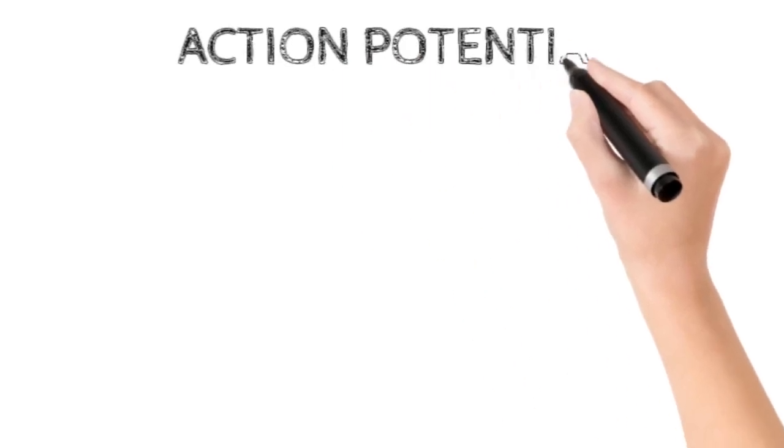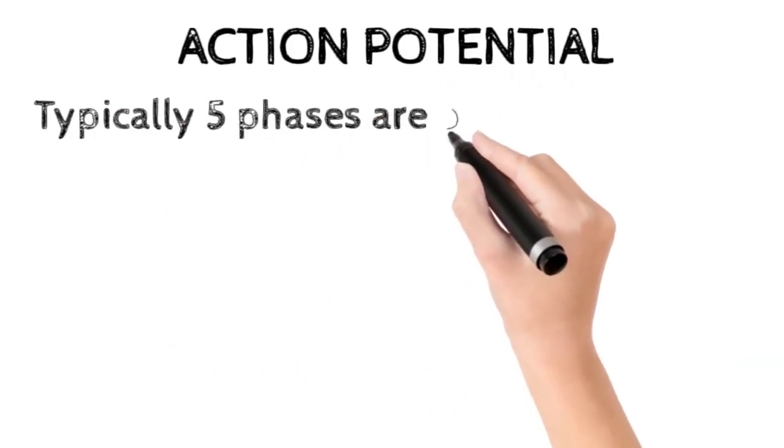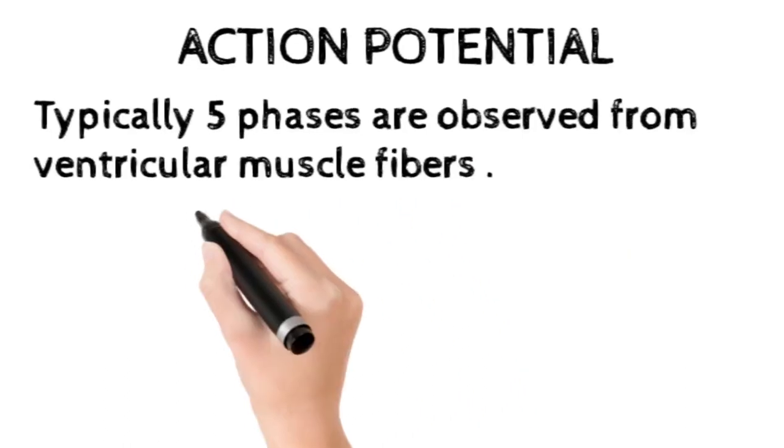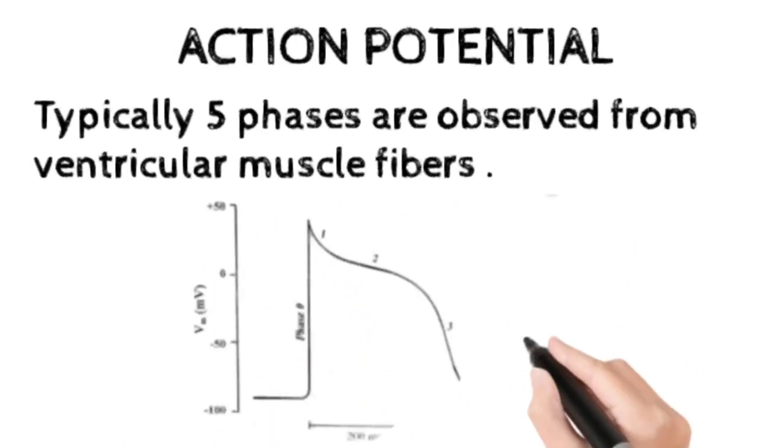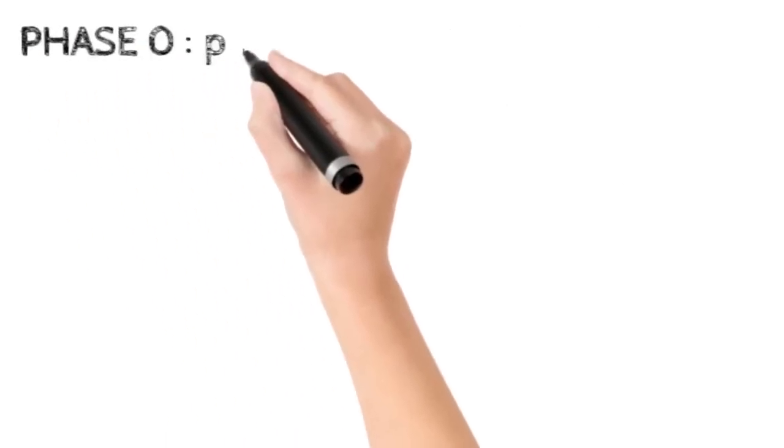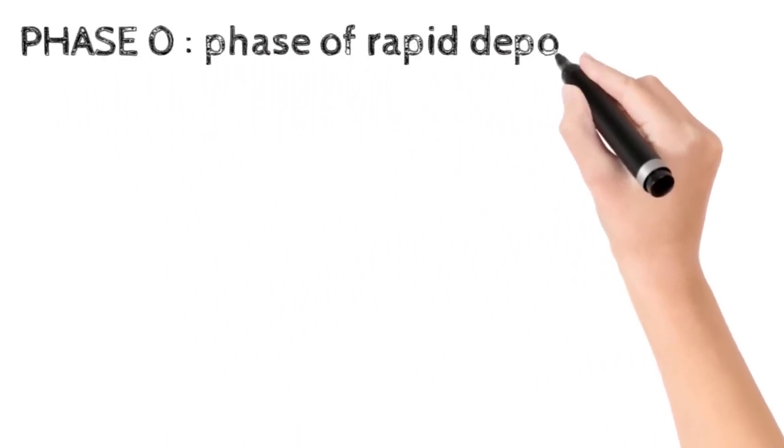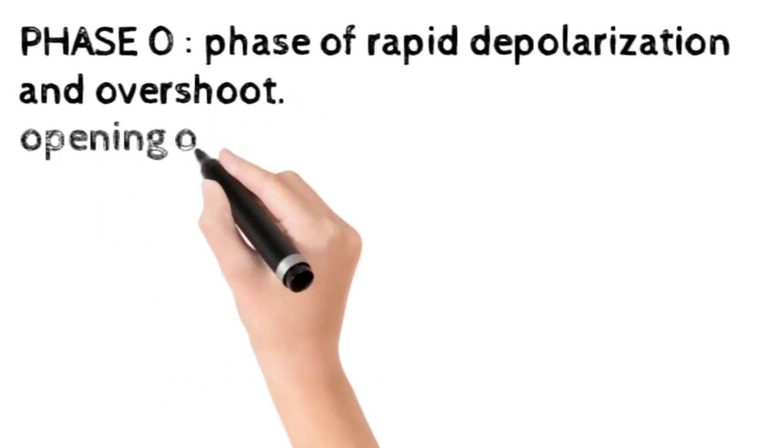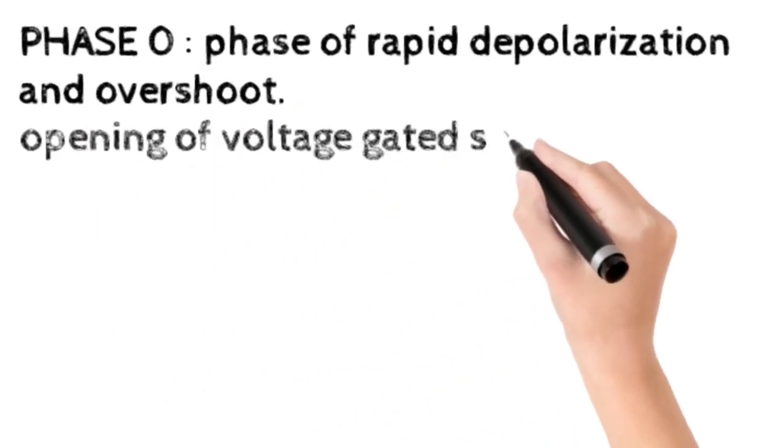Coming to the action potential, there are typically five phases observed in ventricular muscle fibers. Phase 0 is the phase of rapid depolarization and overshoot. It is mainly due to the opening of voltage-gated sodium channels.